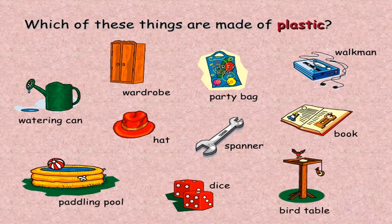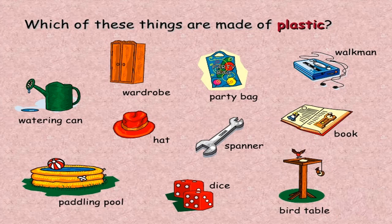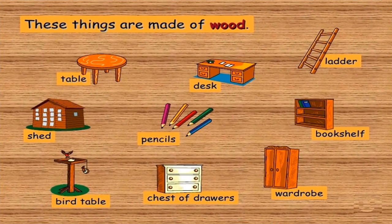Let's have another quick question: Which of these things are made of plastic? Observe carefully. The answers are: watering can, party bag, walkman, dice, and paddling pool. In the same sequence, items made up of wood include: table, board table, pencils, desk, ladder, and bookshelf.